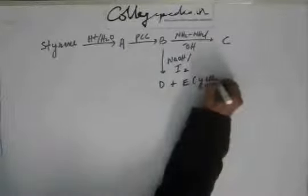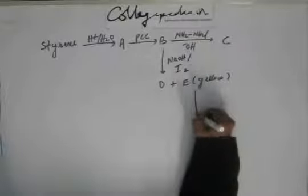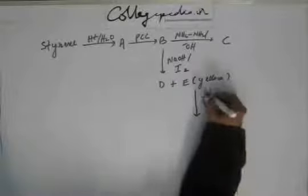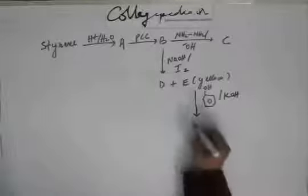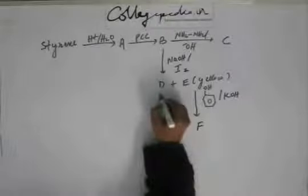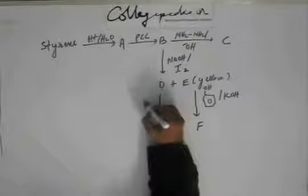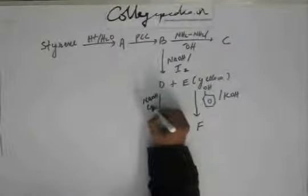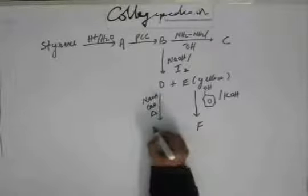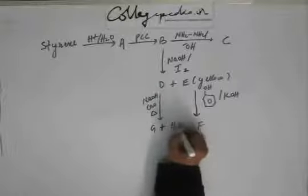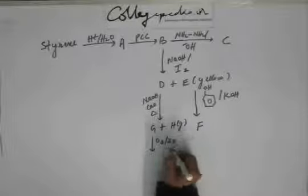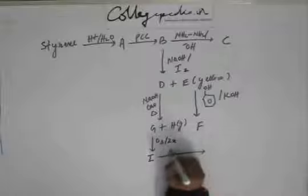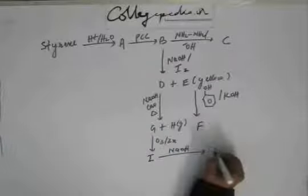E happens to be yellow in color. On E, if we add phenol along with KOH then we get F. On D if you are adding soda lime and heat, you are going to get G plus H. H is a gas. On G if you are adding zinc and ozone, you are going to get I. On I if you add a base, you are going to get J.